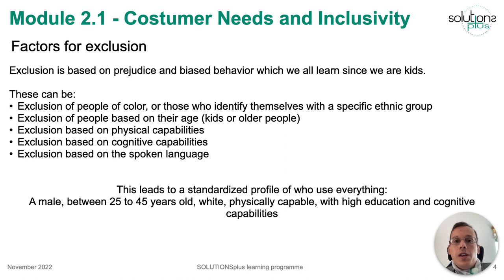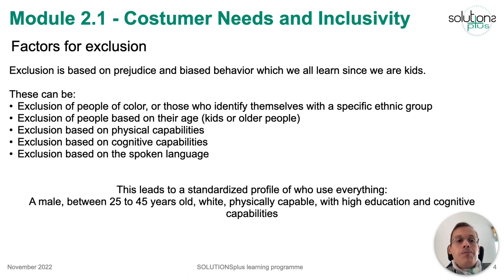Some of the things we use to exclude people are based on skin colour being different, the age of each person, physical capabilities, and many other capabilities that we think don't fit in society. Even the spoken language of each person can be a factor to exclude people. There are many more, and you have to be ready to understand the other factors in your country and your specific situation — which ones are the main problems you have to consider before you start working on this.